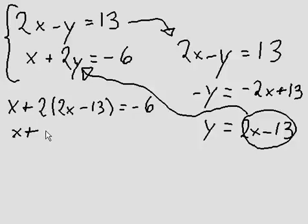2 times 2x is 4x. 2 times negative 13 is negative 26. And the negative 6 just remains there.